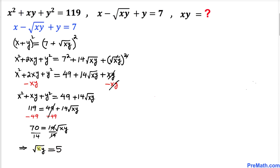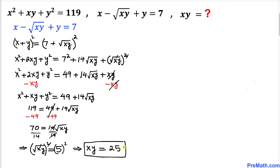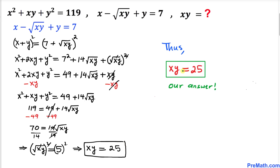Now let's undo this square root by squaring both sides. The square and square root undo each other, so we get x times y equals 5 squared, which is 25. Therefore x times y equals 25, and that's our final answer. Thanks for watching, and please don't forget to subscribe to my channel for more exciting videos!